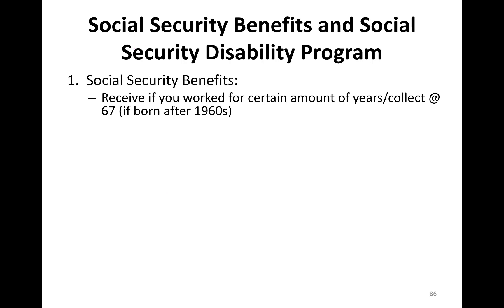Social Security benefits are received if you worked for a certain number of years and collect at age 67 if you were born after 1960, or age 65 if born before 1960 — that's the full retirement age. In a nutshell, you have to work for 40 quarters, which is about 10 years of work experience.